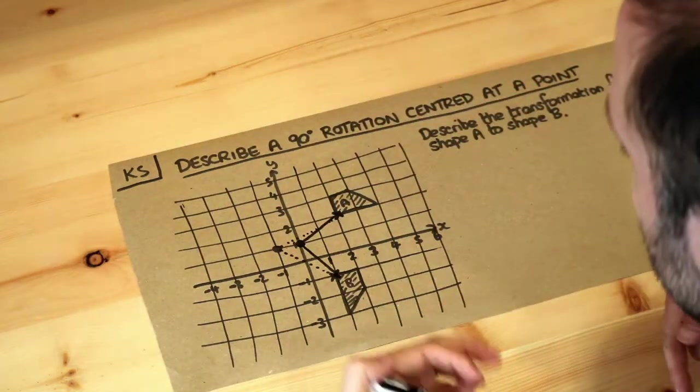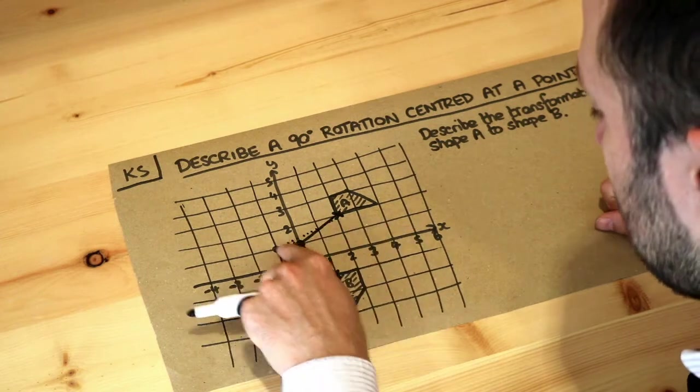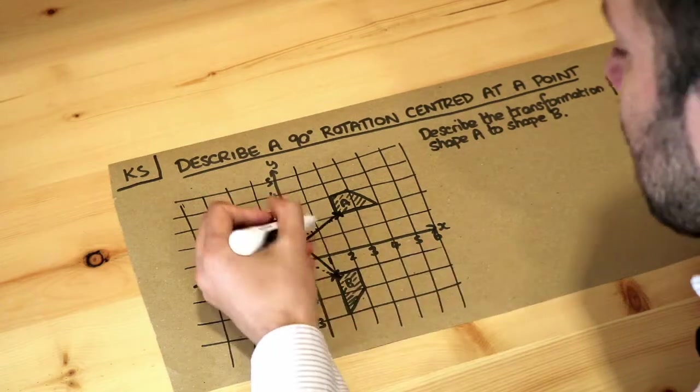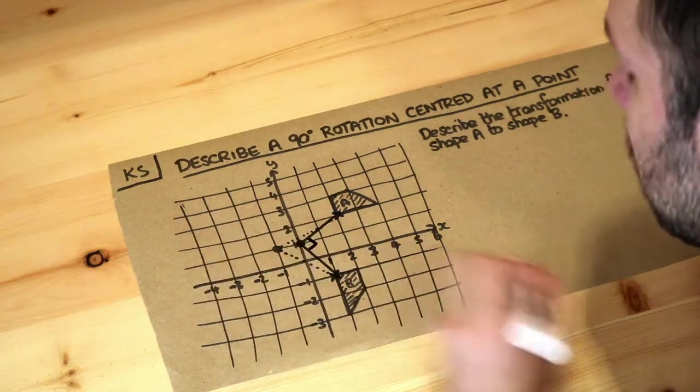And because it involves the same counts, the two and the one, but the opposite way around, so the two across becomes two down and the one up becomes one across, then we do know that is definitely a 90 degree rotation.